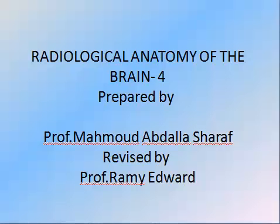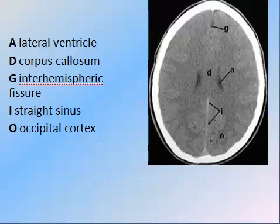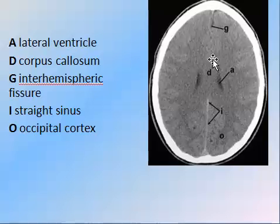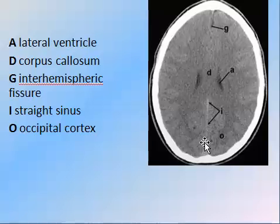This is presentation number 4 on the logical anatomy of the brain. To revise: the region of the corpus callosum is labeled G, which is the interim special region. We also see the region of the straight sinus.